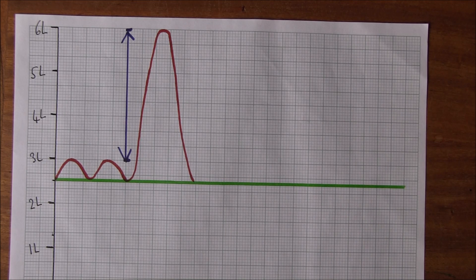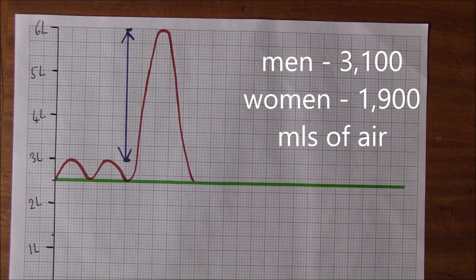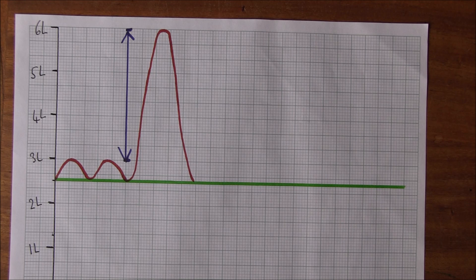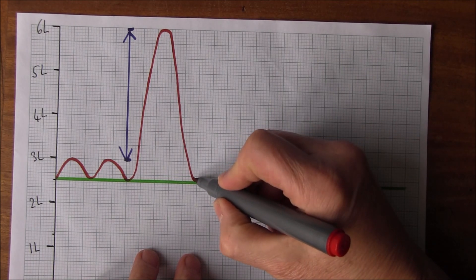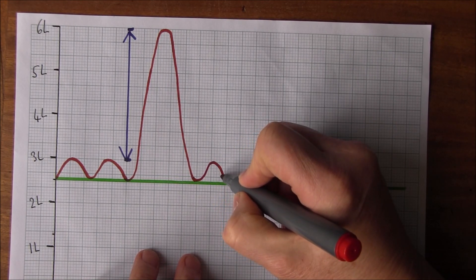The Inspiratory Reserve Volume is about 3,100 mils in men and about 1,900 mils in women — so 3.1 liters in men and about 1.9 liters in women. After that effort, I just have a little rest and breathe normally, back to normal tidal ventilation.